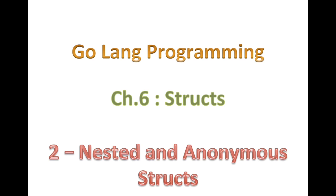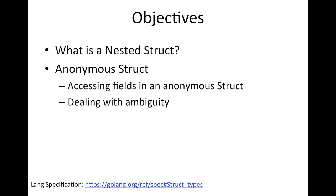We saw that the range operator works just the same on a struct as it does on a slice of structs in our example solution. Now we're going to look at nested and anonymous structs. First nested structures and how to use them, then anonymous structures and their benefits, and then how you access fields in an anonymous structure - anonymous simply means you don't give it a name.